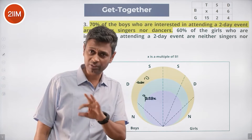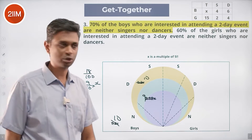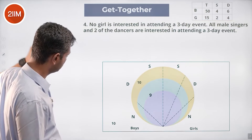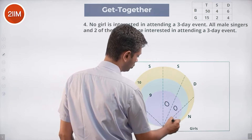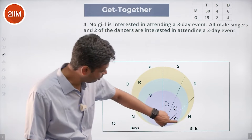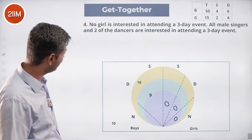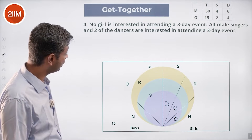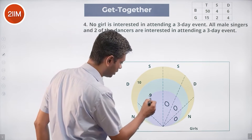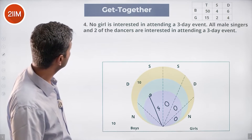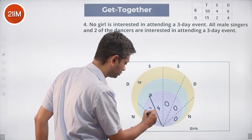We know this is 9 for boys (singers and dancers in two-day), and 40% of girls gives 2 girl singers/dancers in the two-day event. No girl is interested in attending a three-day event — zero across the board for girls in three-day. All male singers (four of them) and two of the dancers are interested in attending a three-day event. Since females are zero in three-day, those two dancers must be male.